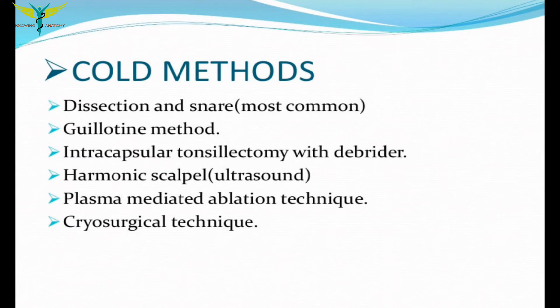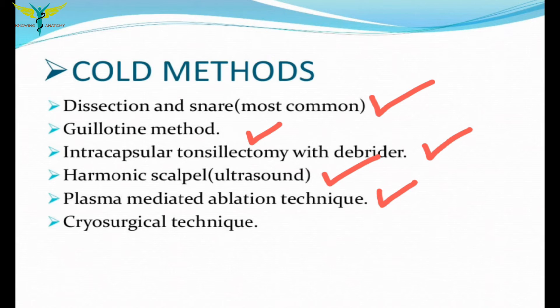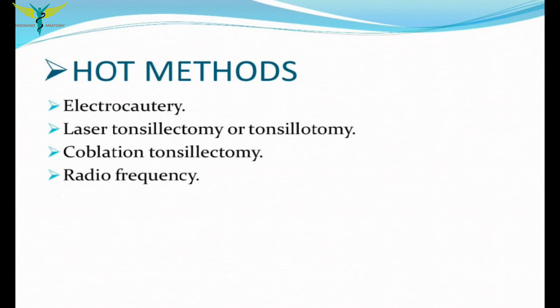There are two methods used in tonsillectomy: cold methods and hot methods. Cold methods include the dissection and snare method, guillotine method, intracapsular tonsillectomy, deep rider harmonic scalpel, ultrasound plasma-mediated ablation, and cryosurgical technique. Hot methods include electrocautery, laser tonsillectomy or tonsillotomy, coblation tonsillectomy, and radiofrequency tonsillectomy.